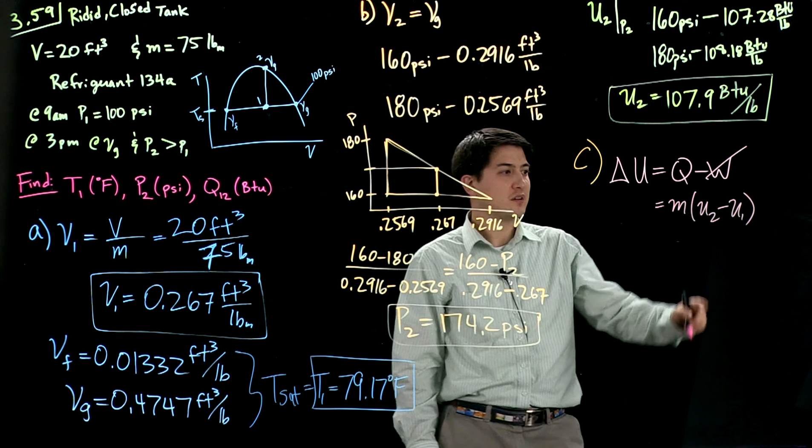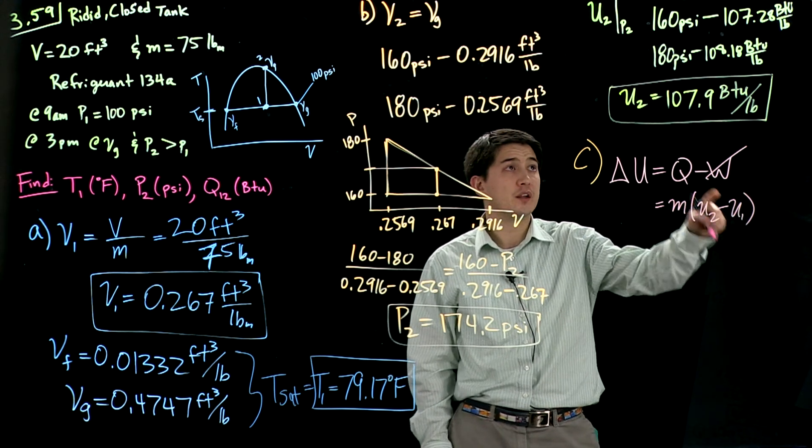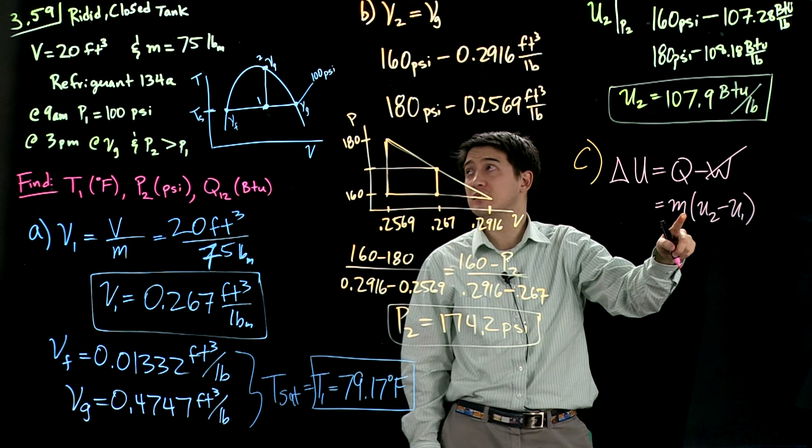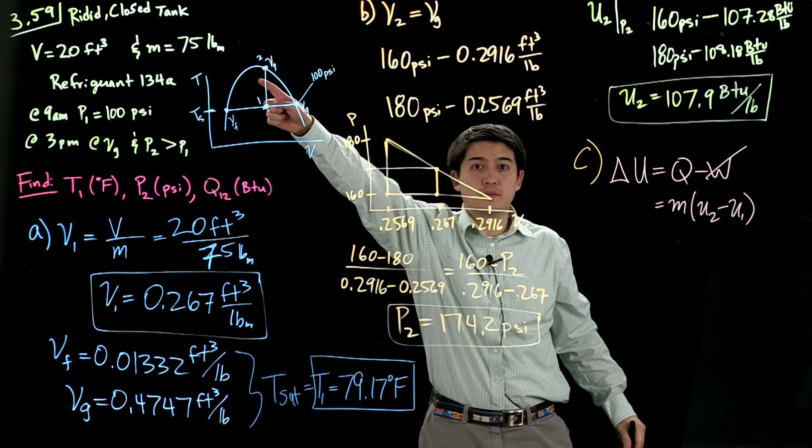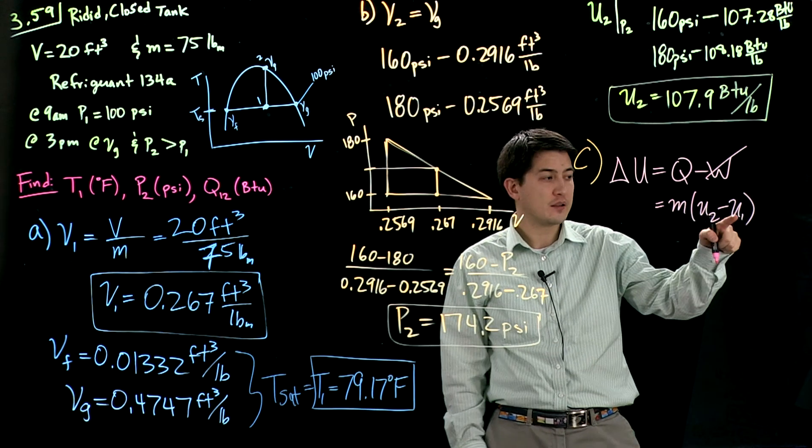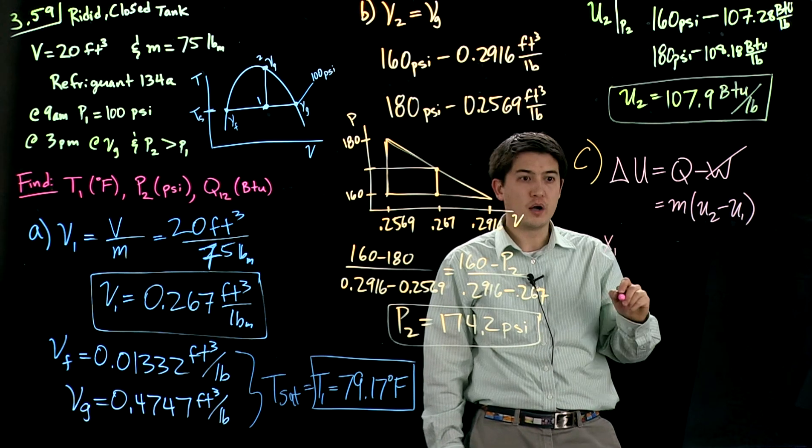We just found this. We don't know this yet. We know that the mass is 75 pounds. It's over here. So we need to find this. In order to do that, we're going to need the quality at 1.